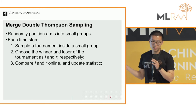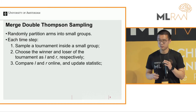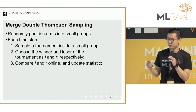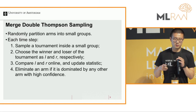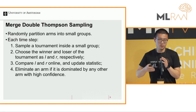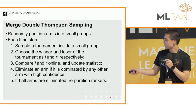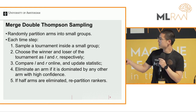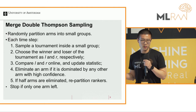We compare these two arms, get feedback, and update our statistics. Our statistics include an upper confidence bound over the preference matrix. If based on this upper confidence bound one arm is dominated by another, we eliminate that arm, because it cannot be the Condorcet winner. If half the arms are eliminated, we redo the partition. This process repeats, and the algorithm stops when only one arm is left.